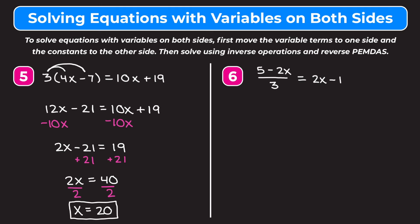Our final example has the quantity of 5 minus 2x divided by 3 equals 2x minus 1. We need to get rid of this 3 first — the easiest way is to multiply both sides by 3, so we don't have to deal with fractions. On the left, the 3's cancel out, leaving 5 minus 2x. On the right, we distribute the 3: 3 times 2x is 6x, and 3 times minus 1 is minus 3.